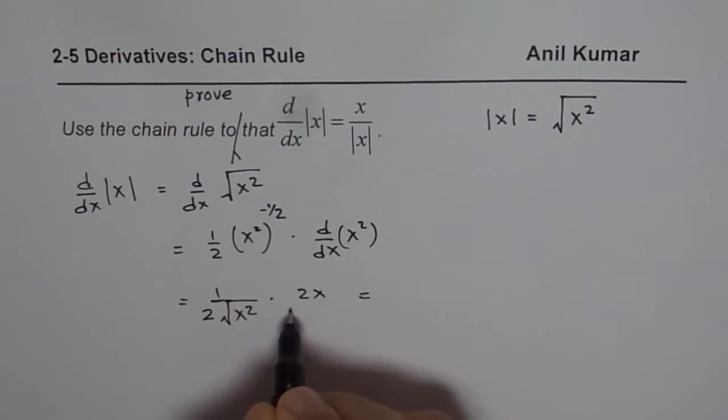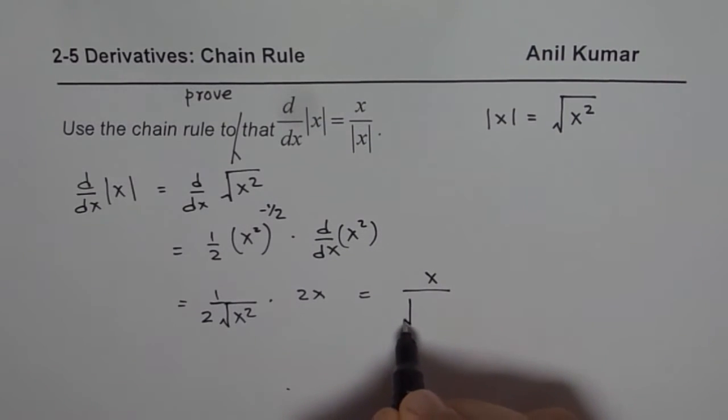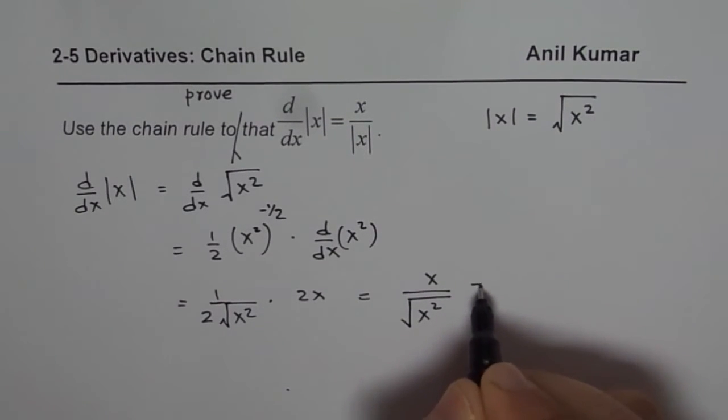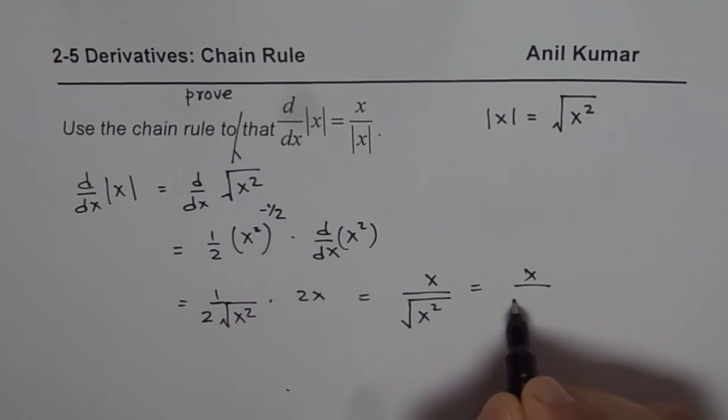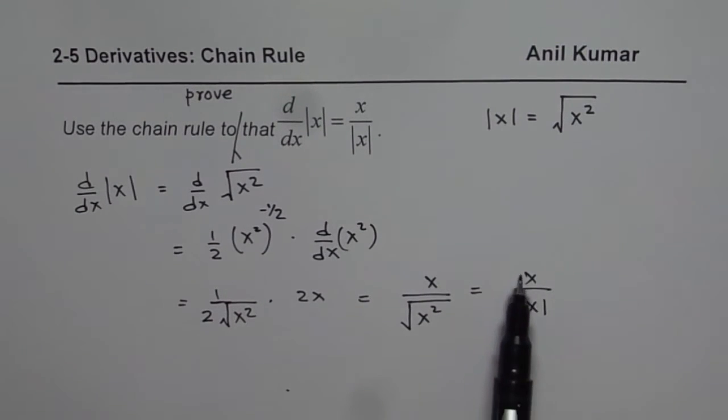So we could simplify this, 2 and 2 cancel. So we get x over square root of x square, and that gives you x over absolute x. So the derivative of absolute function is x over absolute x.